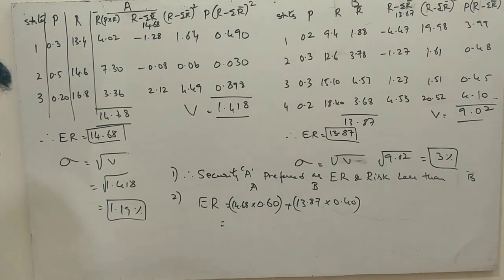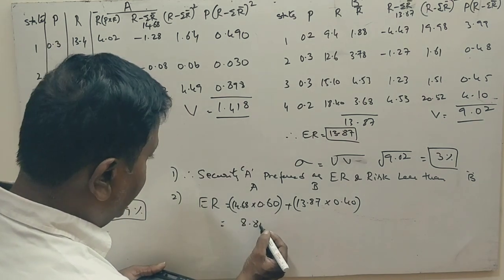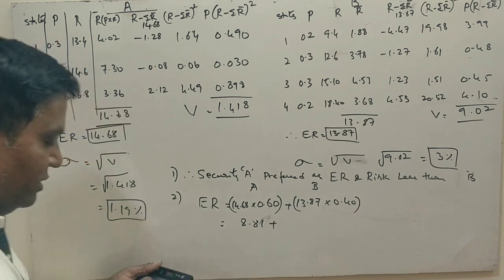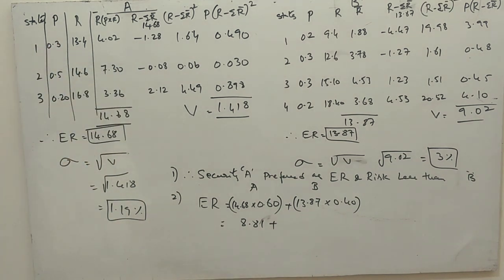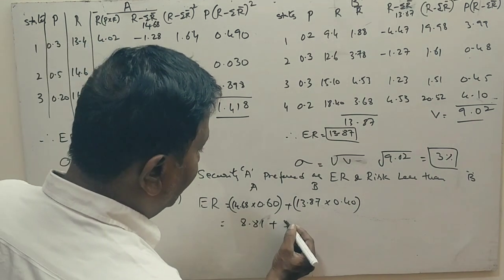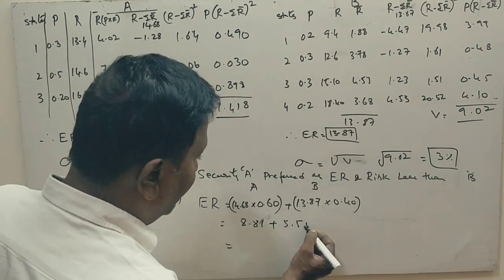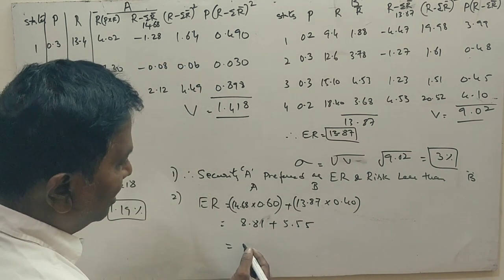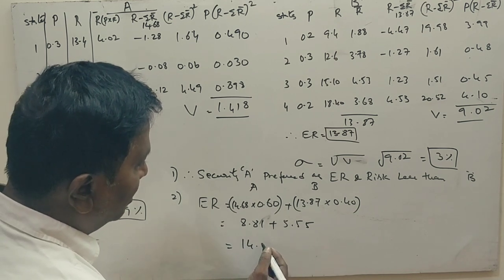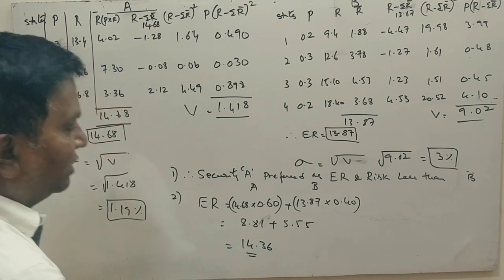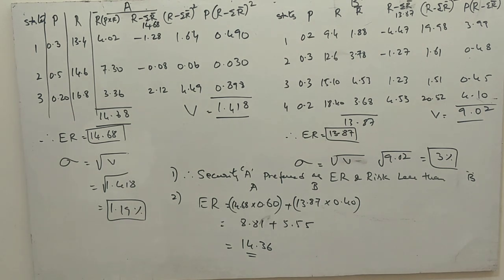Now, 14.68 into 0.6 equals 8.81, plus 13.87 into 0.4 equals 5.55. So, totally, you get 14.36. This is how we get the answer.